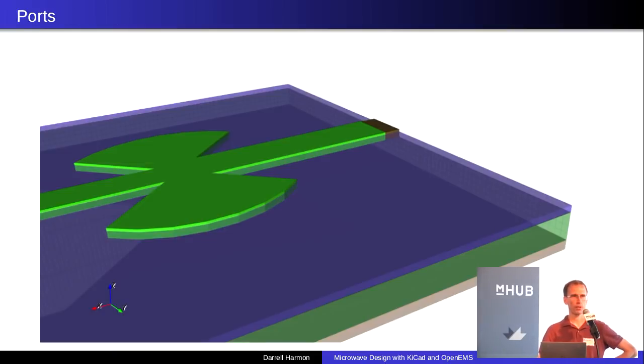Ports. This is where our signal enters and exits. You can see this little brown thing here is our port. This is using the lumped element port in OpenEMS, which might not be the best option, but it's the fastest. There are numerous other types of ports, coax ports, MSL ports, wave guide ports, so on and so forth.